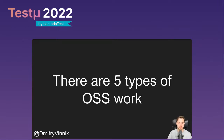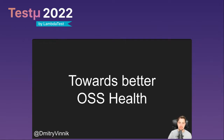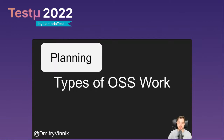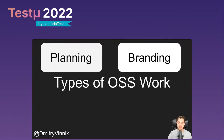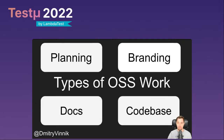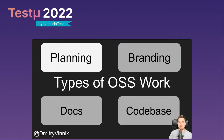In general, there are five types of open source work: planning, branding, documentation work, code base work, and source code work. Let's go one by one.